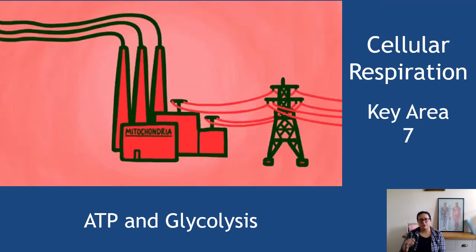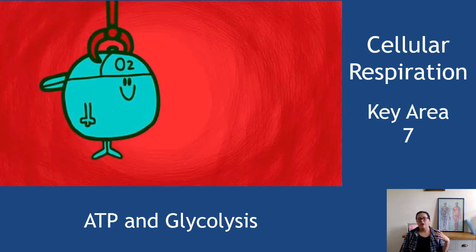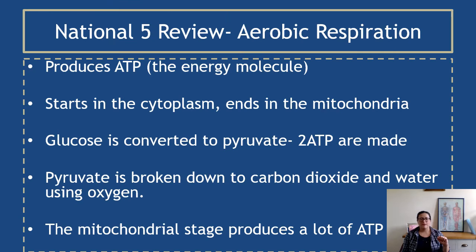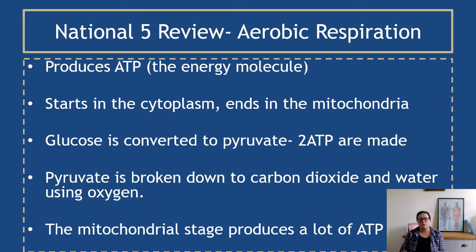When we're looking at cellular respiration here, we are mostly talking about aerobic respiration — the idea of production of ATP through energy transfer from glucose. Things you should know from National 5 about aerobic respiration: aerobic respiration produces ATP, which is the energy molecule. It starts in the cytoplasm and ends in mitochondria. Glucose in the first stage is converted to pyruvate and two ATP are made. In the second stage, pyruvate is broken down to carbon dioxide and water using oxygen, and the mitochondrial stage produces a lot of ATP. If any of that seems completely unfamiliar, I'd recommend going back to the Nat 5 material before attempting to build on it.